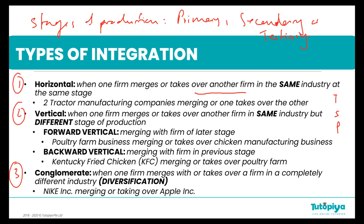Forward vertical integration means merging with or taking over a firm that is in a later stage of production. For example, a poultry farm business merging with or taking over a chicken manufacturing business in the secondary industry.